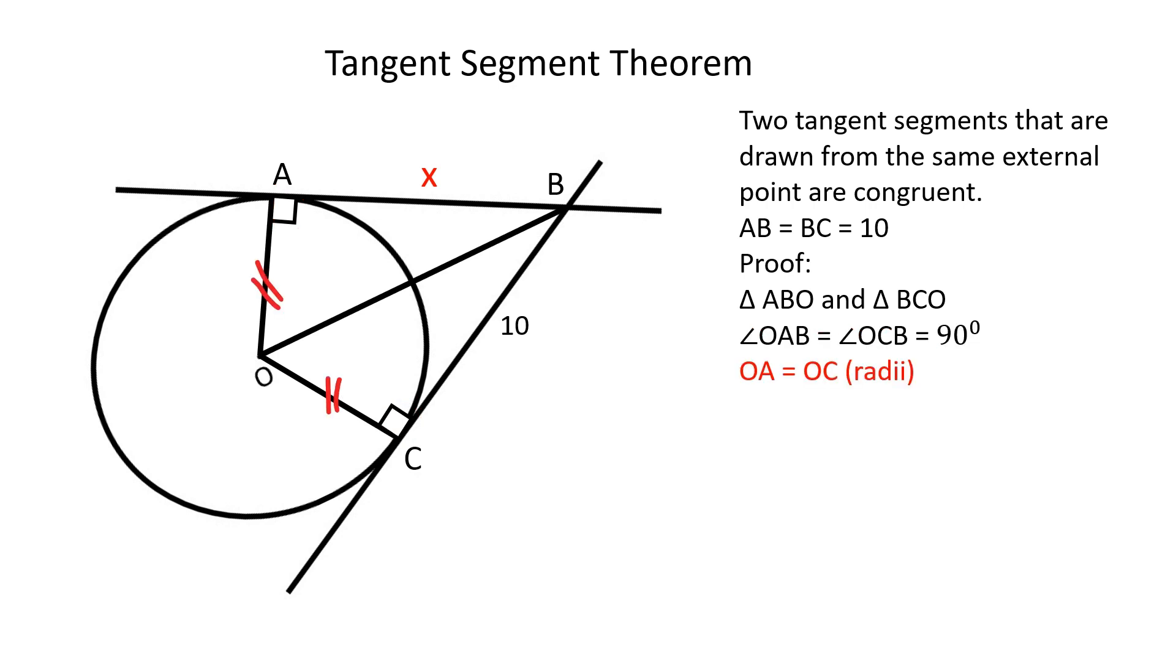OA is equal to OC because they are both radii of the same circle, and OB is shared by both triangles.